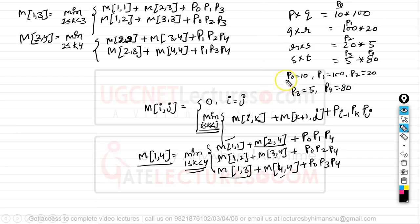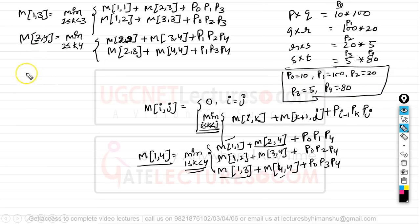So the minimum cost of multiplying M1×M2×M3×M4 is 19,000 scalar multiplications.